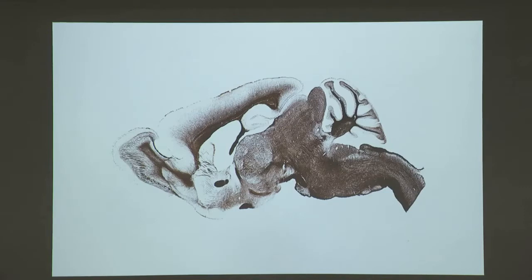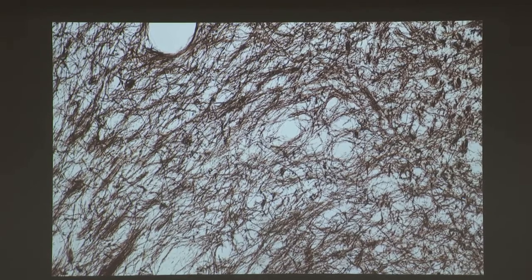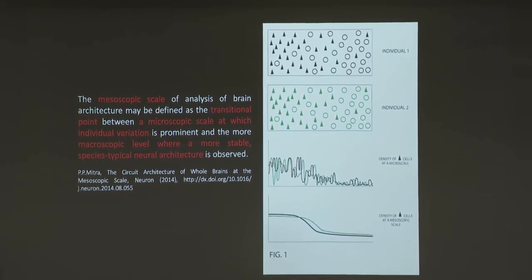This is a sagittal section through a mouse brain stained for myelin, which coats some axonal fibers. At this level it is recognizably a mouse brain, with cerebellum, thalamus, brainstem, and so on. If you start zooming in, you see individual nuclei; zoom in more and you start seeing individual variation. There is some transitional scale where you go from species-typical patterns to individual patterns. One would like to map brain circuits at that mesoscopic scale because that's typical to the species — what is typical to the individual is programmed by the environment.